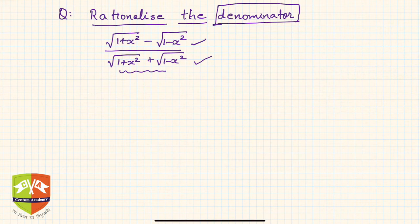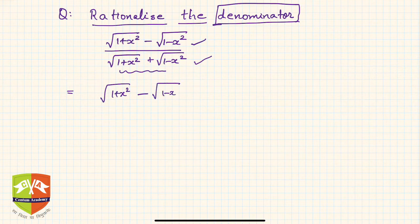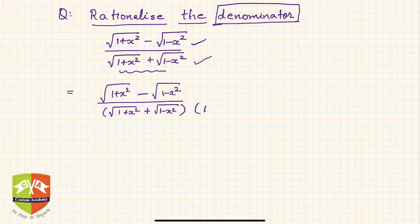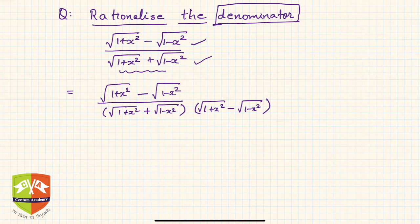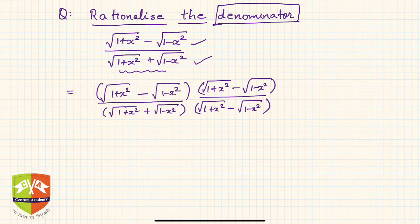So what do you do? You multiply it with its conjugate. So the original denominator is √(1+x²) + √(1-x²), and now we multiply it with its conjugate: √(1+x²) - √(1-x²). If you are changing the denominator, you must compensate by multiplying the numerator as well. So we multiply and divide the expression by the conjugate of the denominator.